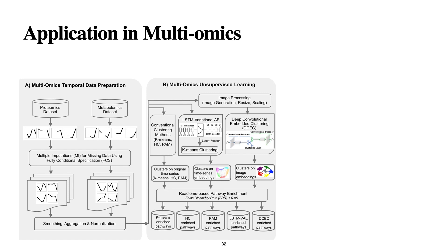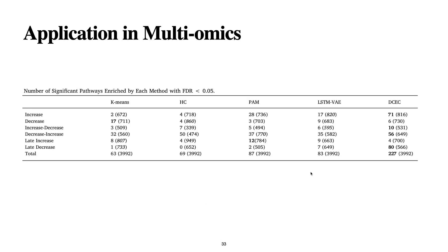They trained their model and converged it until the false discovery rate was less than 0.05. Here we can see that their model can find five more pathways compared to the other models. For example, I eat food and it digests — that is one pathway. This model can recognize more pathways, finding additional relationships downstream. Here we can see that their model performs better compared to the other models.